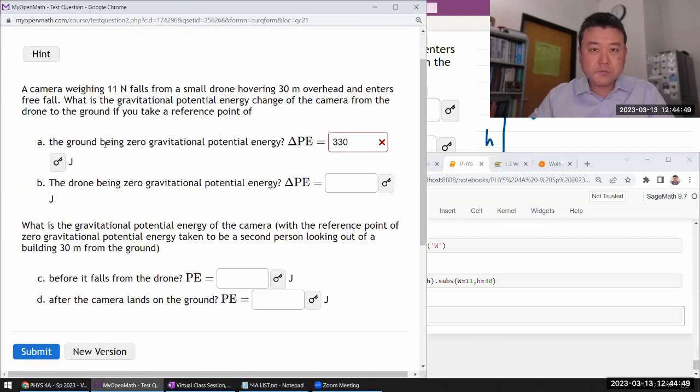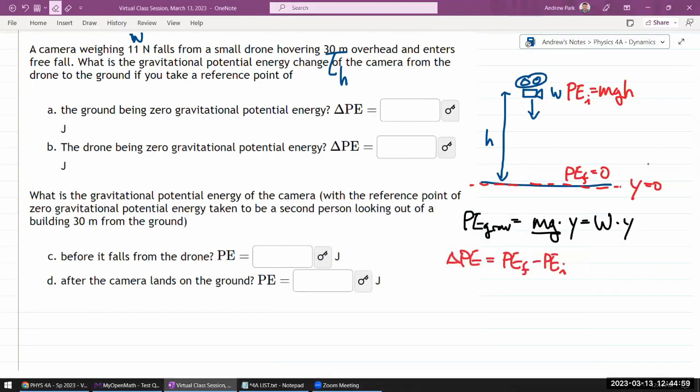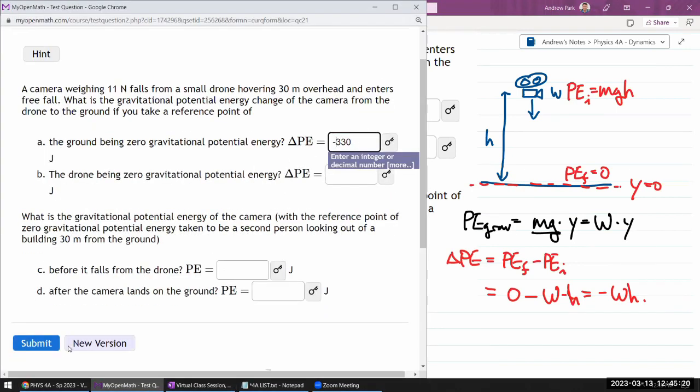What is the potential change from the... oh sorry, sign error. Final minus initial, so final minus initial is zero minus mgh or w times h, or minus wh. So it's going to be negative of the number I put in. Minus 330.